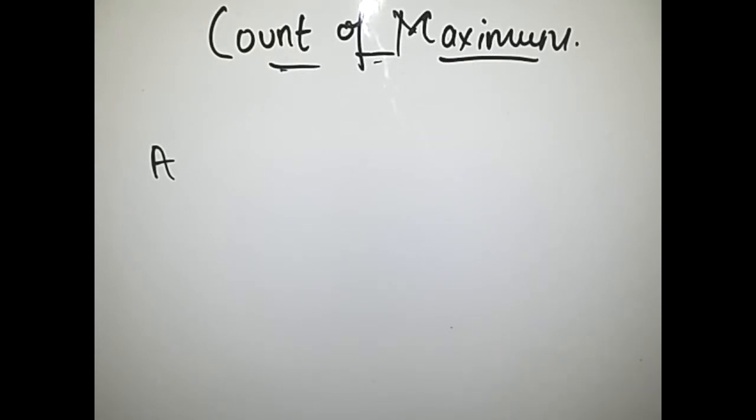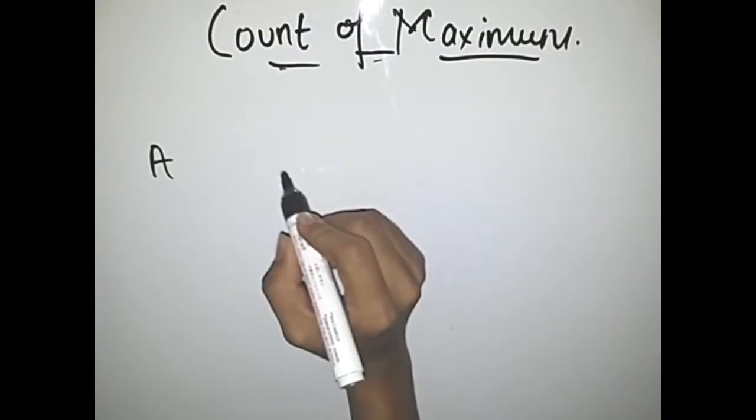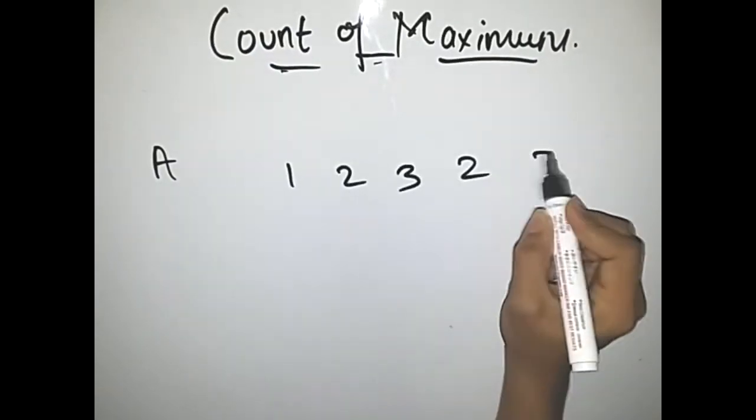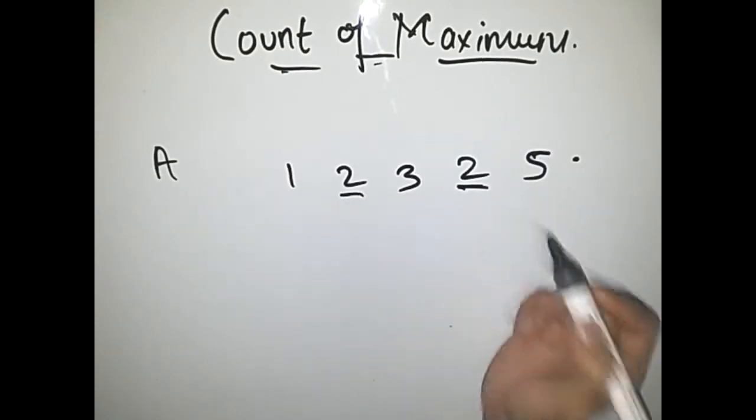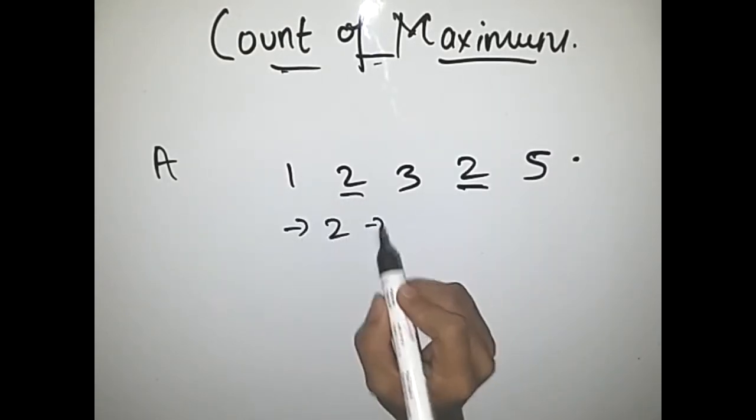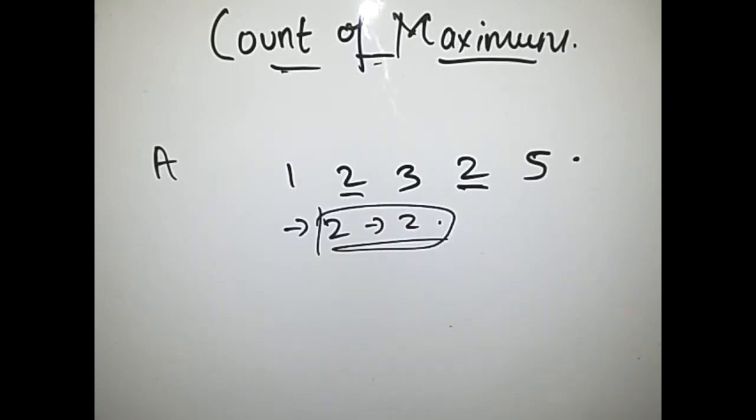Let's take an example from the problem itself. If this is the array, then 2 is repeating itself 2 times, so we just have to print 2 and it's repeating 2 times. This is what our output should be.